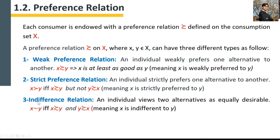The third type is indifference relation, where an individual treats two alternatives as equally desirable. We use the notation: x is indifferent to y if and only if x is at least as good as y and also y is at least as good as x. So when x is at least as good as y and y is at least as good as x, you are indifferent between these two options. For example, if orange is at least as good as apple for you and apple is at least as good as orange, then orange is indifferent to apple.